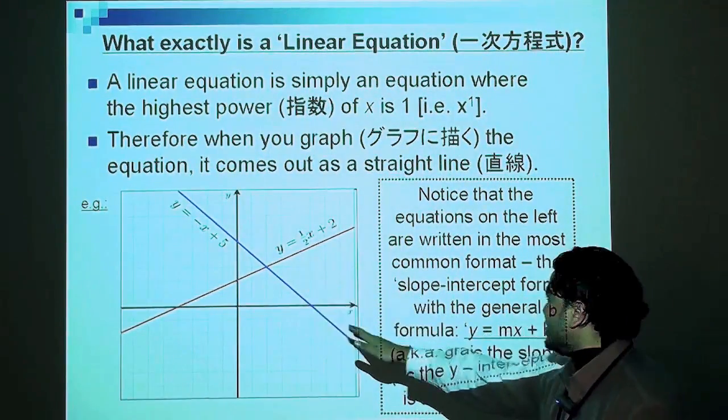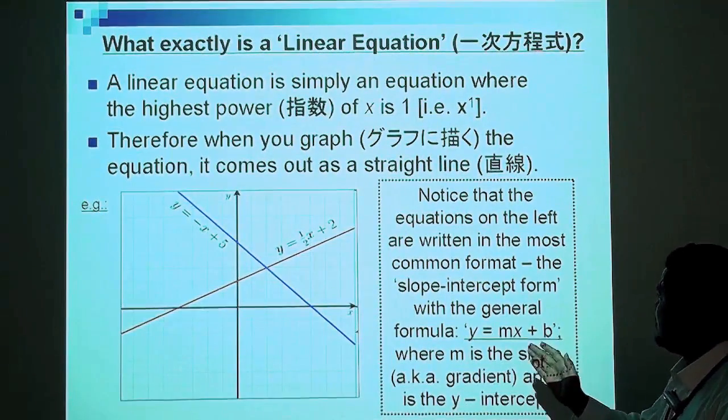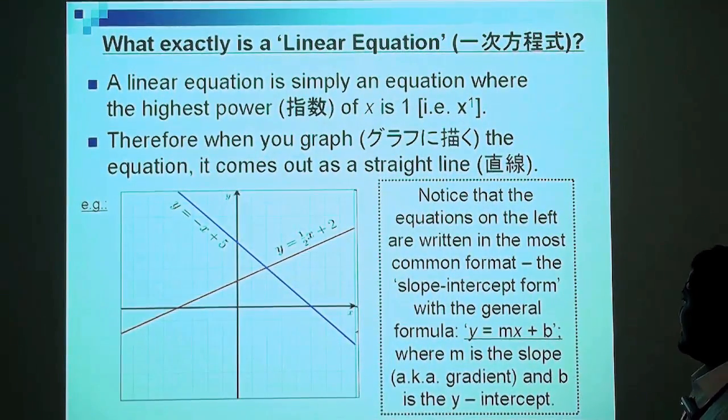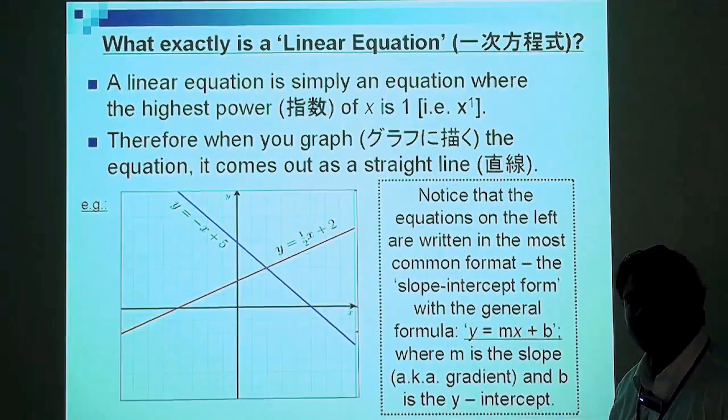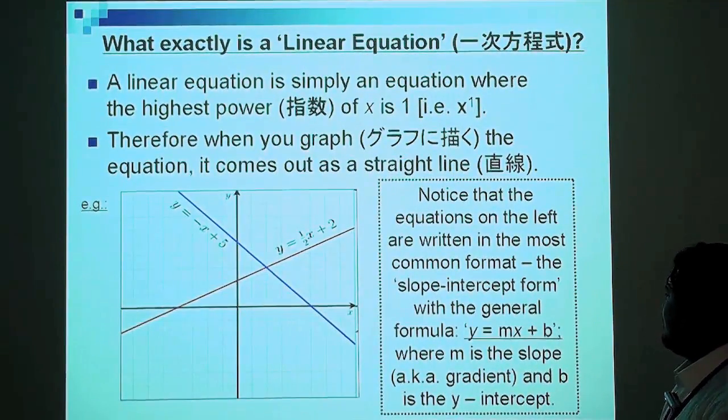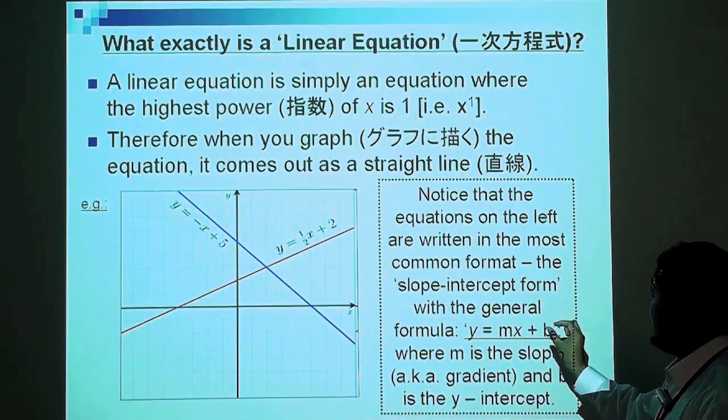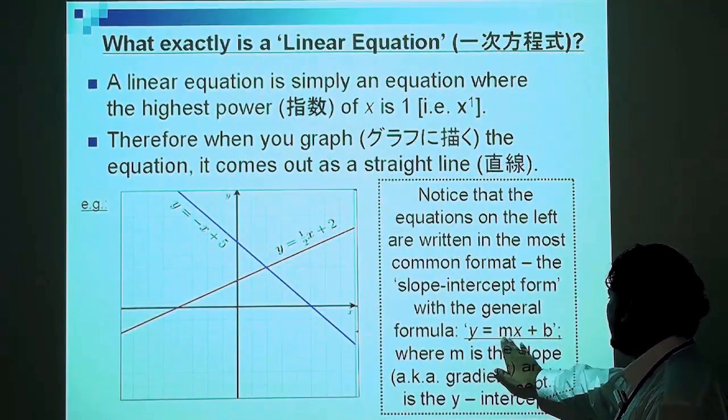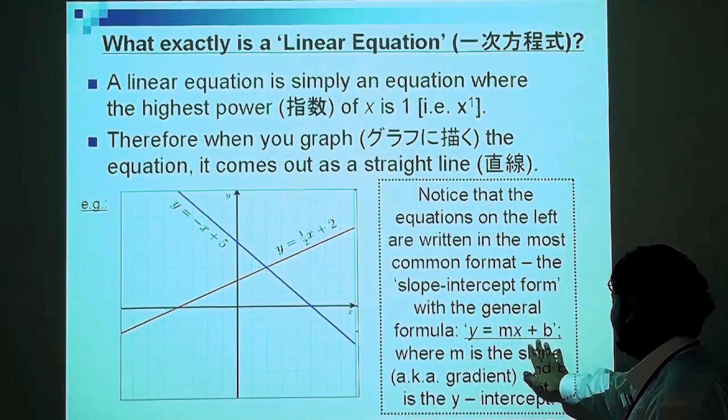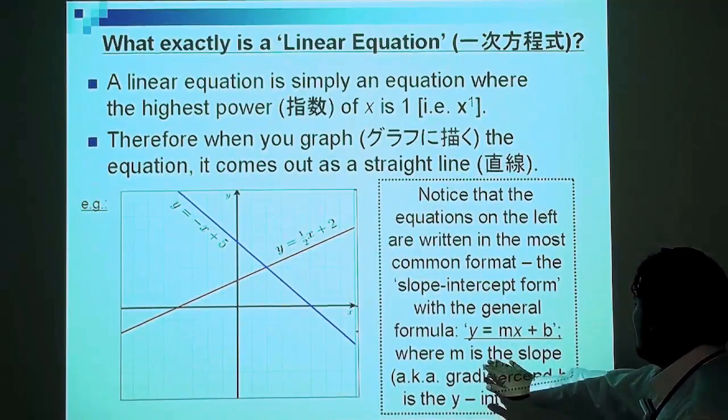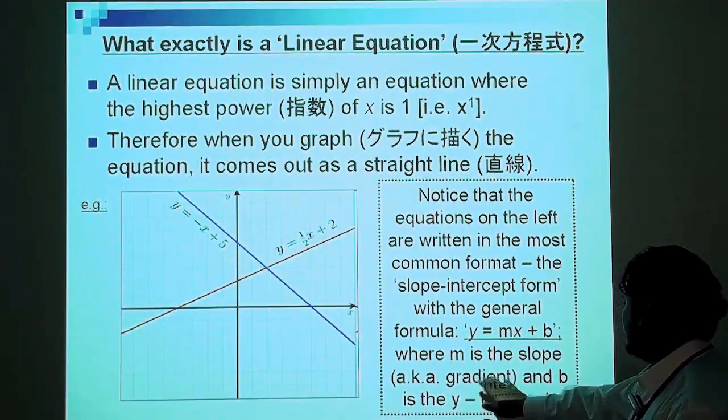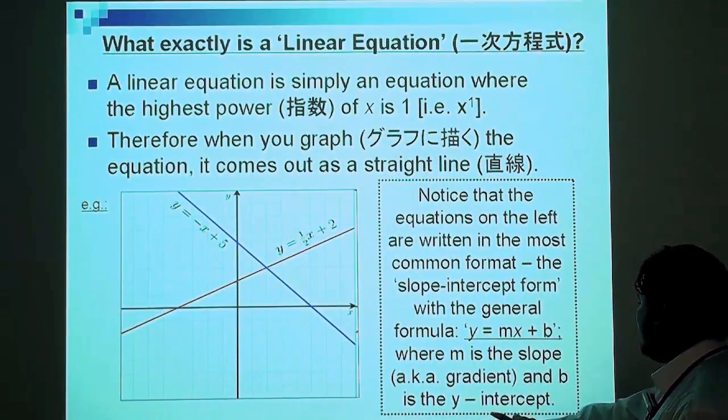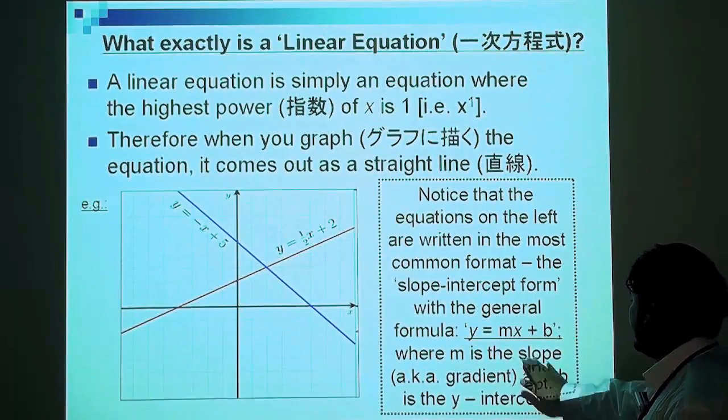Notice that the equations on the left are written in the most common format, the slope-intercept form. The general formula of the slope-intercept form is y equals mx plus b, where m is the slope (also known as gradient) and b is the y-intercept.